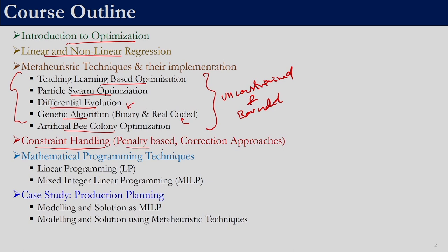Broadly we will be looking into penalty-based and correction approaches. Once you know penalty-based constraint handling or correction approach for constraint handling, you can use that with all five techniques to solve any constrained optimization problem. We will also be looking at two mathematical programming techniques: linear programming and mixed integer linear programming. We are also bringing these mathematical programming techniques in so that you can understand the limitations of meta-heuristic techniques.